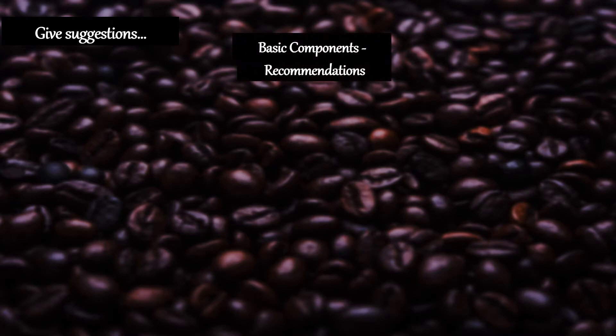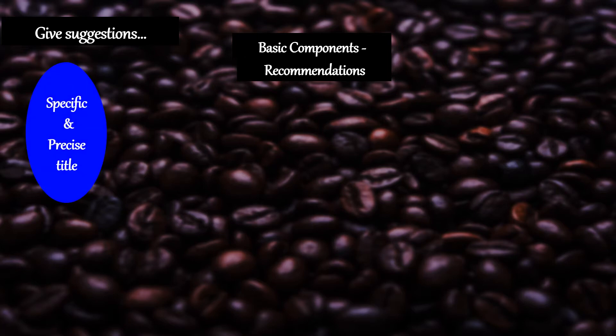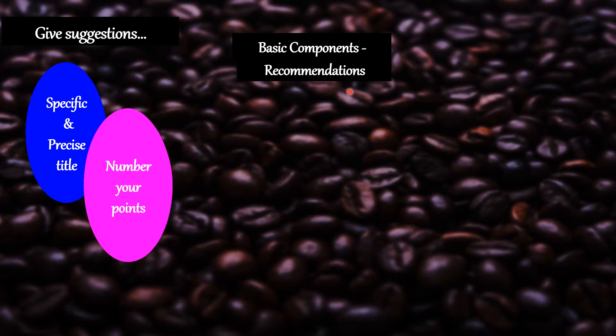There are basic components which you need to remember while writing a set of recommendations. First, you have to give a specific and precise title — the word 'recommendation' should be written in the title. Next, number your points: 1, 2, 3, 4. You are not supposed to use bullets.